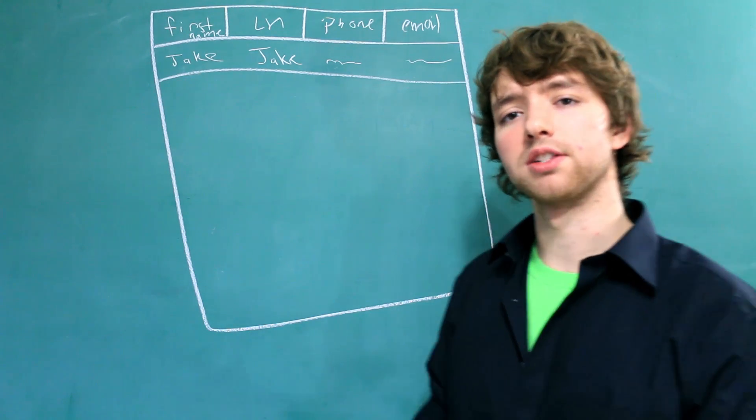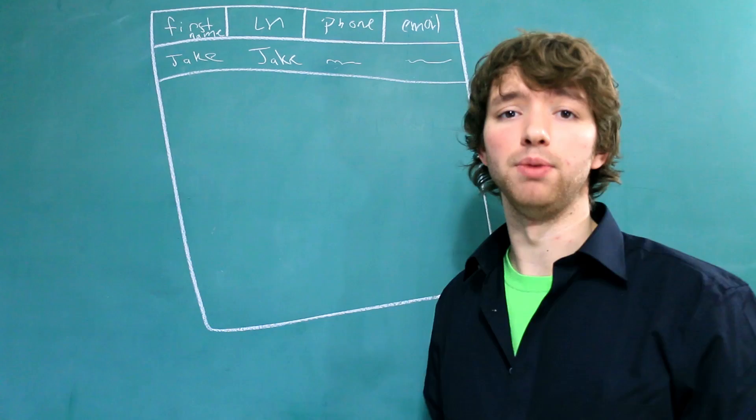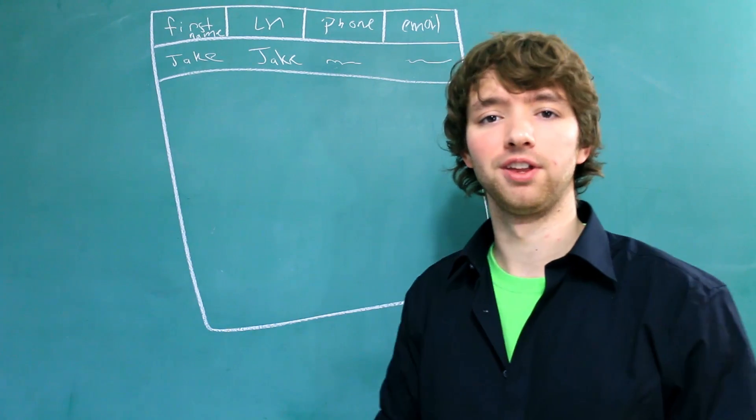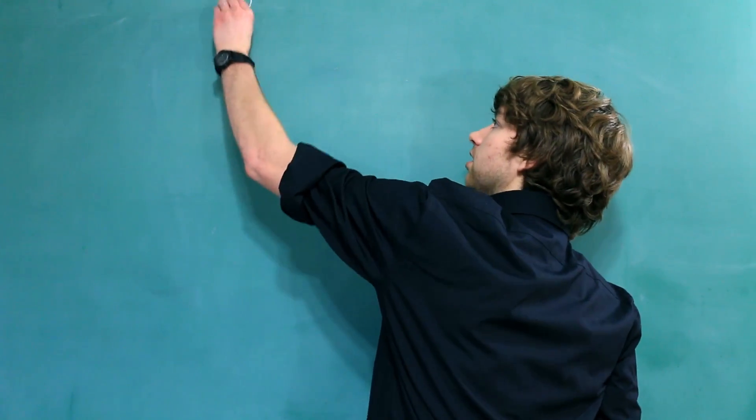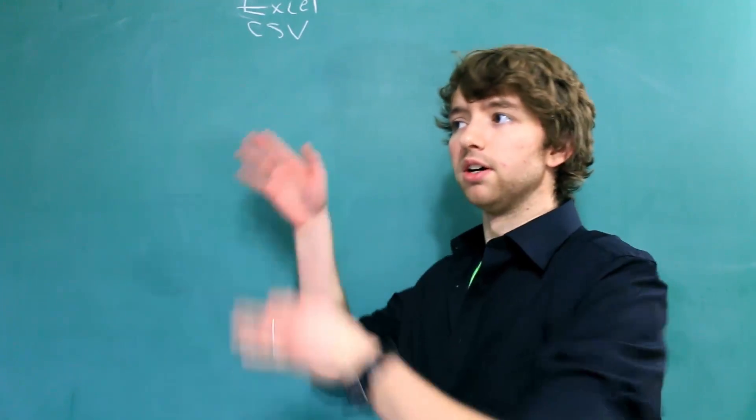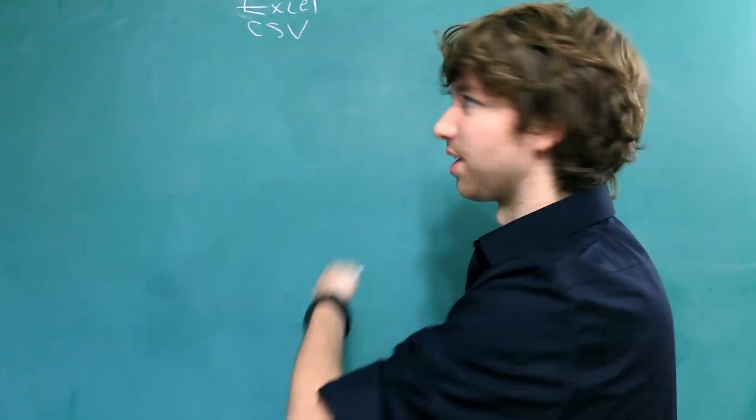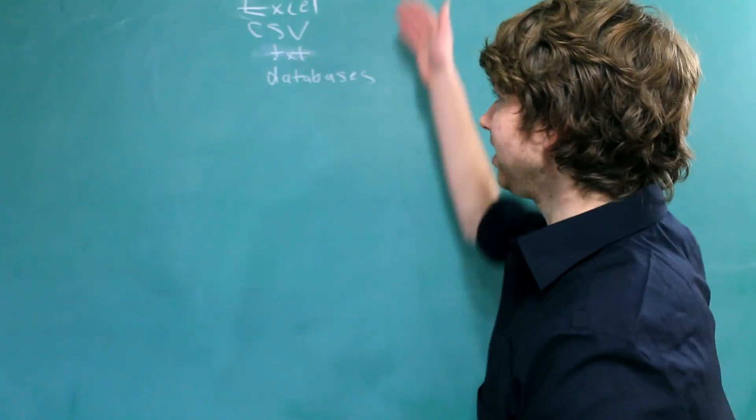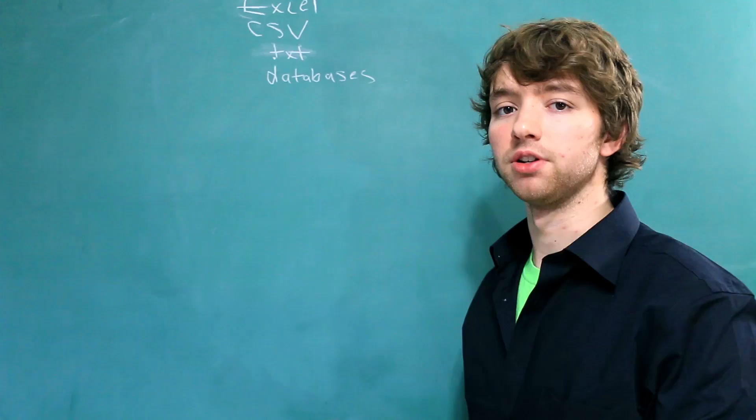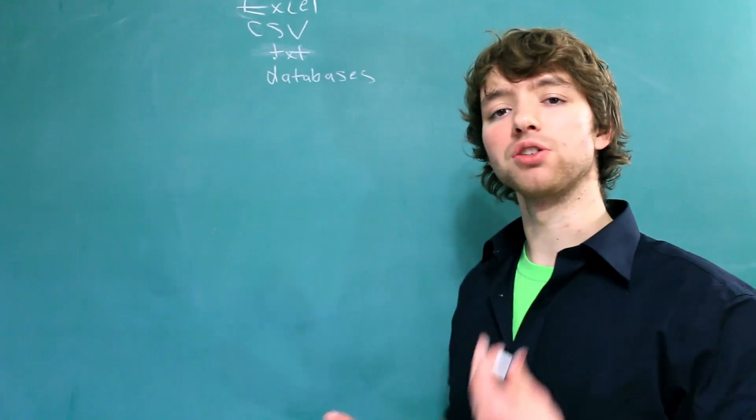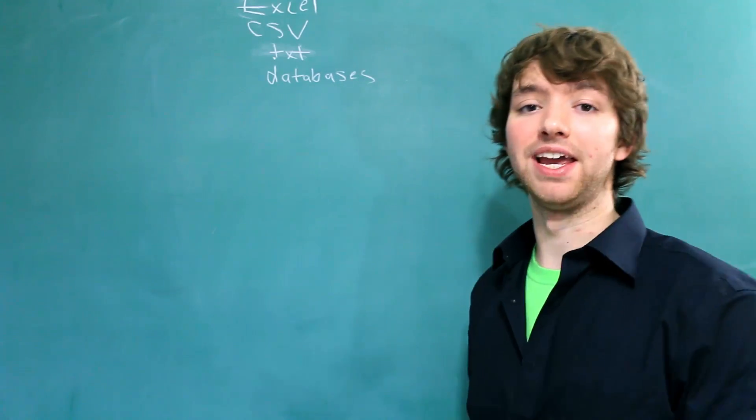So now we need to discuss why would you want to use a database over something like an Excel spreadsheet, or just a text document, and so forth. So there's many different ways we can store data. For example, there's Excel. There's something known as comma-separated value, and that's just values, comma, values, comma, values. There's text files, and then there's things like databases. Now each one of these has an application. You don't always have to use a database for everything, but there are some specific situations when you want to use a database.